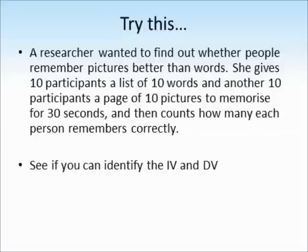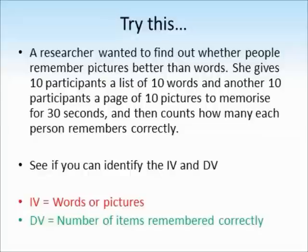To see if you understand the concept of IVs and DVs, have a go at this research scenario. A researcher wants to find out whether people remember pictures better than words. She gives 10 participants a list of 10 words and another group of 10 participants a page of 10 pictures to memorise for 30 seconds, then counts how many each person remembers correctly. Pause the video and identify the IV and DV. The independent variable is whether participants are given words or pictures, and the dependent variable is how many items they remember correctly.